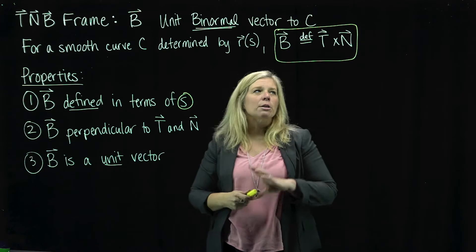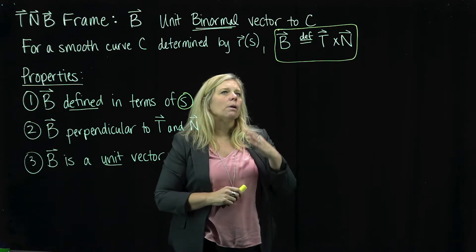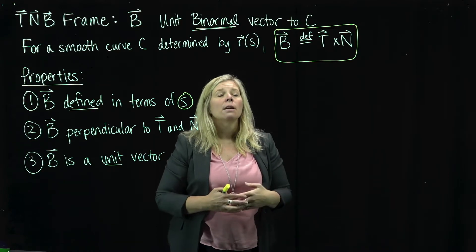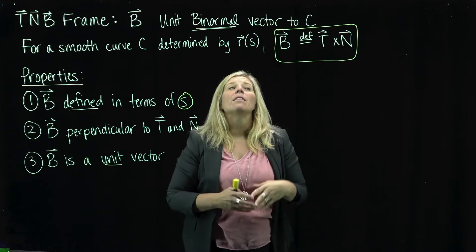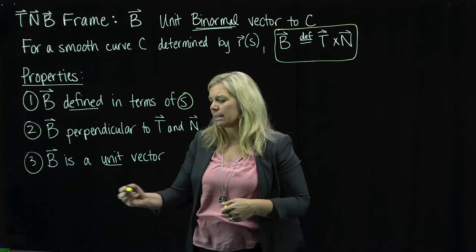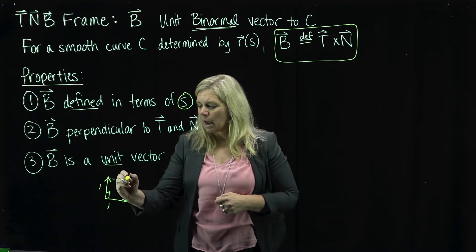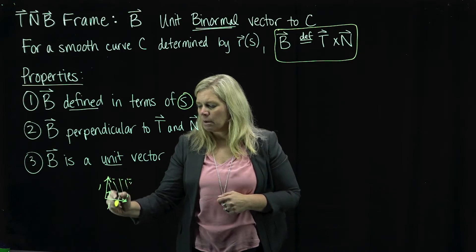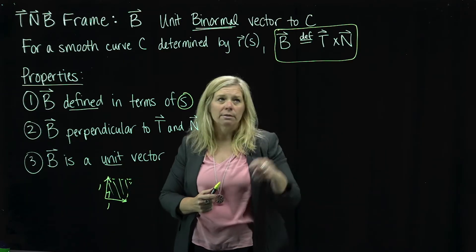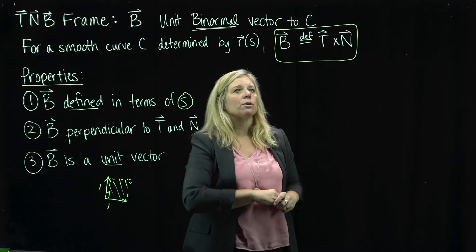Something else that falls out of the definition — though perhaps less obvious — is that B is a unit vector. When we cross two vectors, the result represents a directed area. The magnitude of B would be the area formed by T and N. Since T and N are perpendicular and both one unit long, the parallelogram they form is a one-by-one square, giving a magnitude of one. So B is indeed a unit vector.